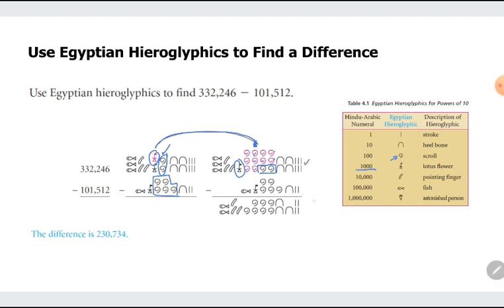So here, 6 strokes minus the 2 strokes. That's 4 strokes. 4 heel bones and 1 heel bone is 3 heel bones. You now have a total of 12 scrolls minus the 5. That would be 7 scrolls. The lotus flowers will cancel out. You will bring down the pointing finger and the fishes. There's a fish below here. So you will be left with 2. So interpreting this in Hindu-Arabic, you actually have 230,734 as your answer.